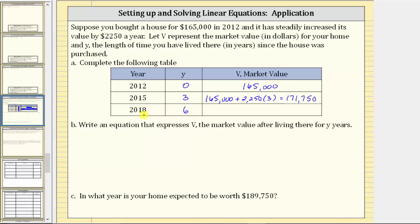Then in the year 2018 you've lived in the home for six years and therefore the market value V is equal to $165,000 plus $2,250 times six. Well $2,250 times six equals $13,500. $165,000 plus $13,500 equals $178,500, which is the market value in the year 2018.